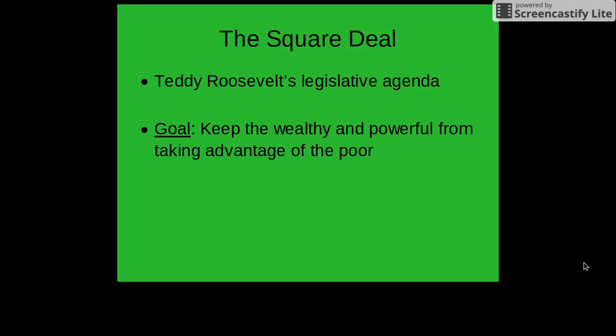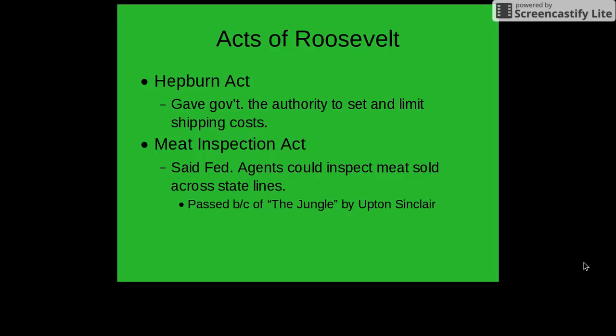The goal of the Square Deal was to keep the wealthy and powerful from taking advantage of the poor — Teddy Roosevelt's plan to look out for the common man, the working man. Some examples of this are the Hepburn Act and the Meat Inspection Act. The Hepburn Act gave the government the authority to set and limit shipping costs, specifically aimed at the railroad companies.